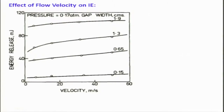This is shown here: energy release versus velocity. You can see that for all cases, whatever the spark gap width is, the energy release is increasing with velocity, which is expected because some heat will be taken away. When the gap increases, the energy requirement is higher because you have to apply higher voltage and deliver more energy into the volume. Taking this data and expressing it as an empirical relationship, we get IR = 16·RE·d^0.15, where d^0.85 is basically the gap width d.